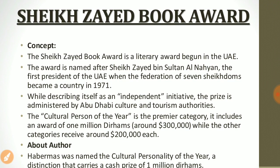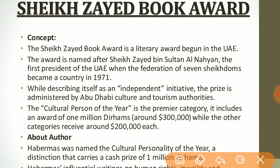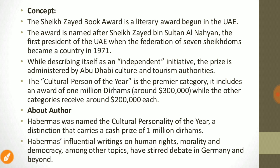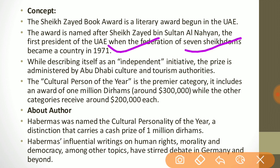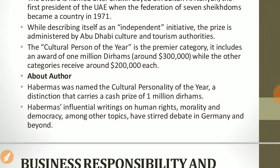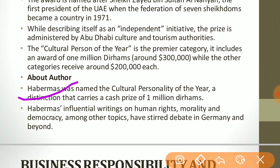The next topic is the Sheikh Zayed Book Award, a literary award begun in the UAE. The award is named after Sheikh Zayed bin Sultan Al Nahyan, who was the first President of the UAE when the federation of seven sections became a country in 1971. The prize is administered by the Abu Dhabi Culture and Tourism Authority. The Cultural Personality of the Year is the premier category and carries a cash prize of 1,000,000 dirhams, while other categories receive around 2,000,000 dirhams each. Habermas was named Cultural Personality of the Year.